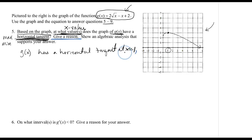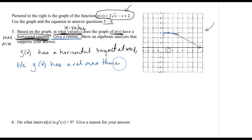Next, I need to give a reason: g of x has a relative maximum there. Lastly, the question asks us to show an algebraic analysis — not graphical — that supports the answer of a horizontal tangent at x equals 1.